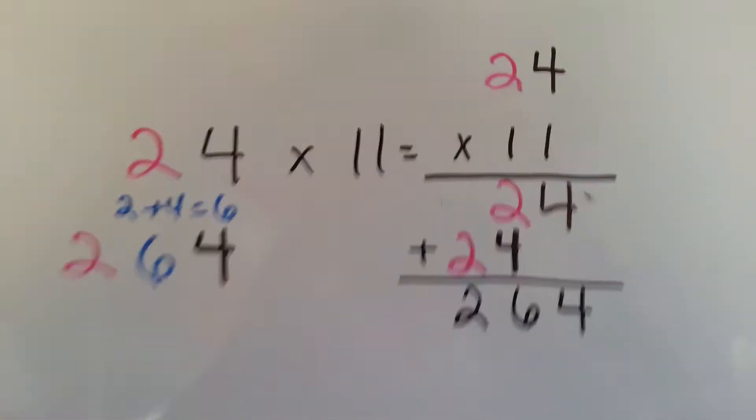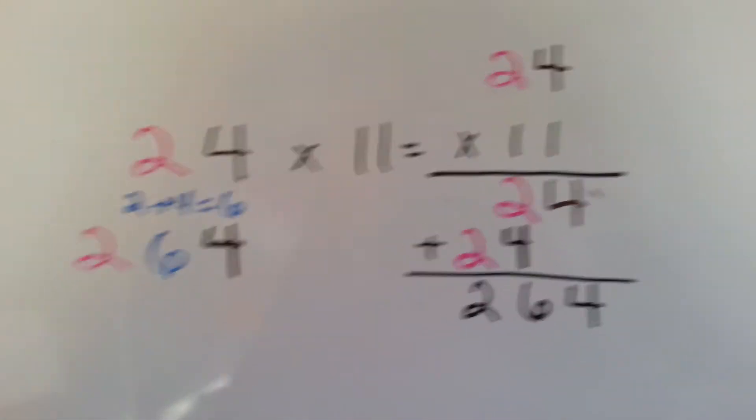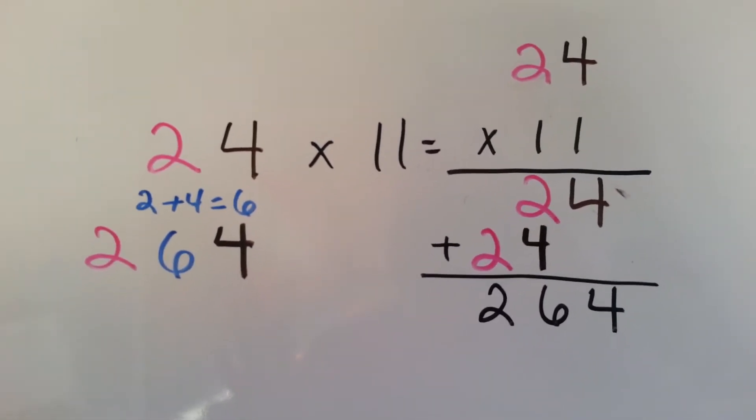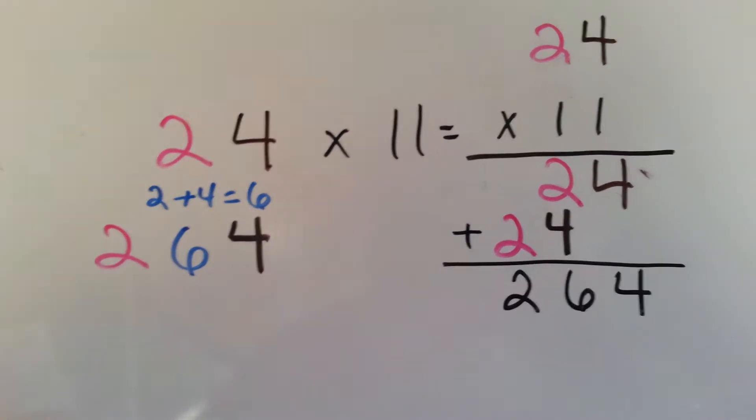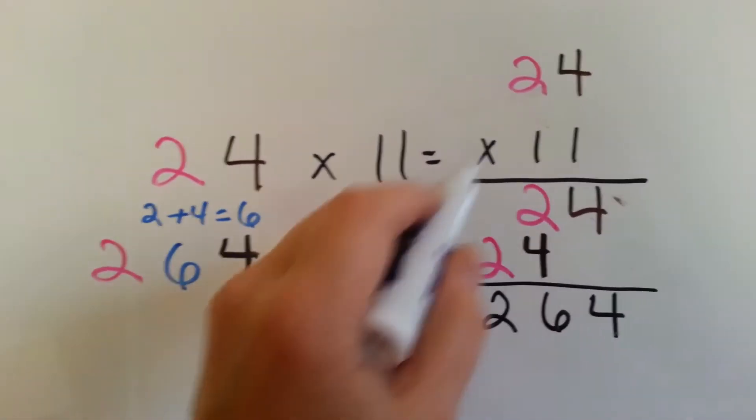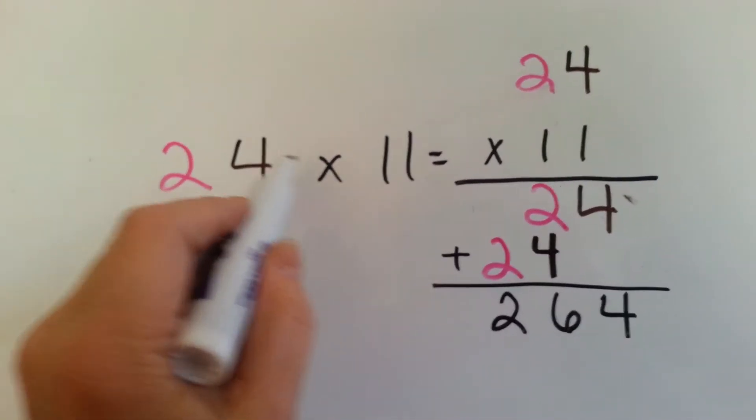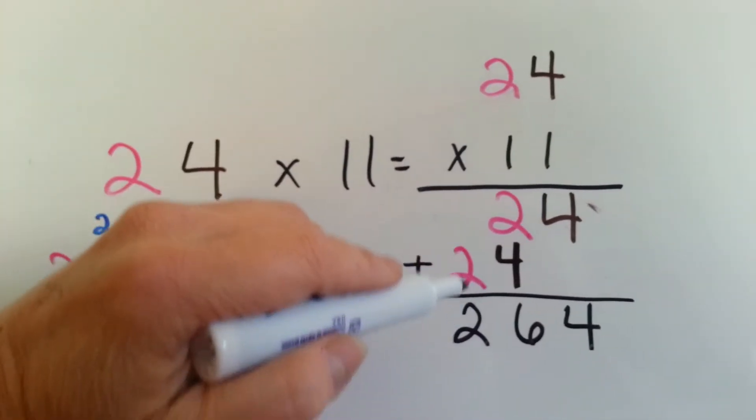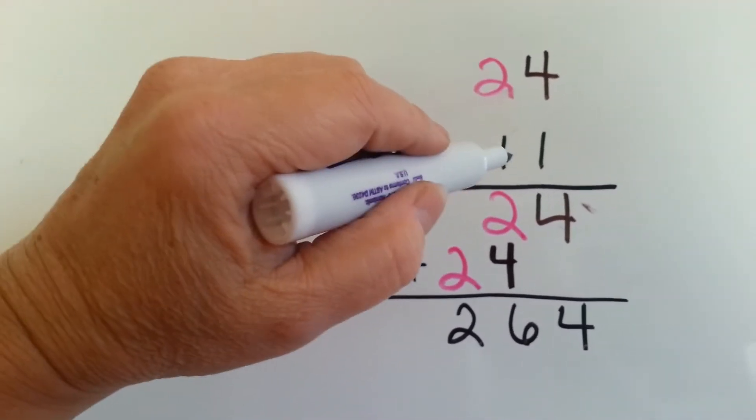So now I'm going to show you something that is going to look a little confusing, but I want you to just relax, take a deep breath, and open your mind up to something very cool. So, on this side, you can see we have 24 times 11, right here. See that? And I did it the stacked way. 24 times 11.